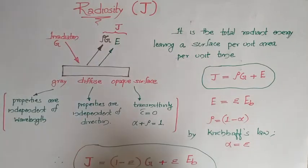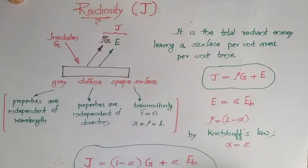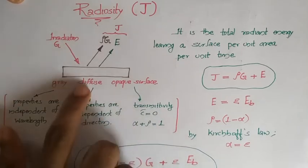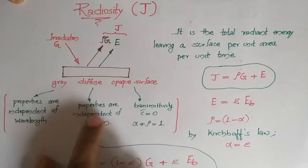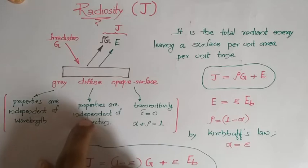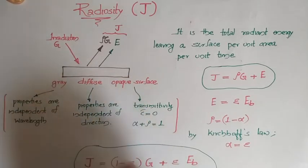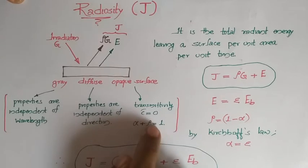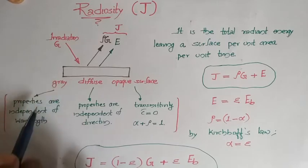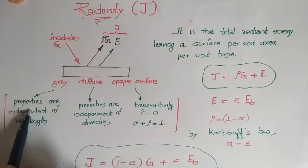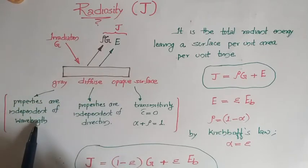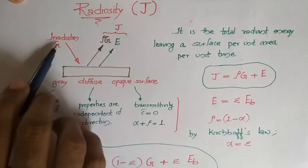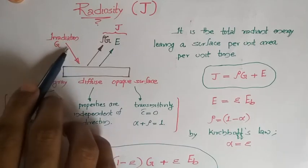In this video we'll be discussing radiosity. Consider a surface that is gray, diffuse, and opaque. A diffuse surface has properties independent of direction. An opaque surface has transmittivity tau equal to zero, meaning it does not transmit any incident radiation. A gray surface has properties independent of wavelength. So for this surface, properties are independent of both wavelength and direction, and transmittivity equals zero. An amount of energy is incident on such a surface.